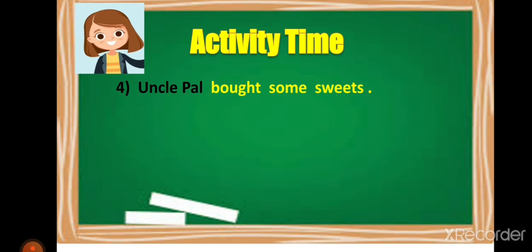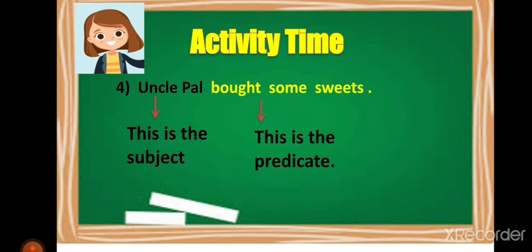Fourth example: Uncle Paul bought some sweets. The verb is 'bought.' Who bought sweets? Uncle Paul. So Uncle Paul is the subject and 'bought some sweets' is the predicate.